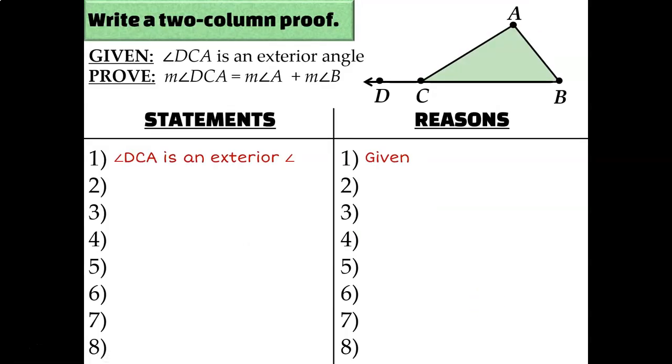All I'm going to tell you is that angle DCA is an exterior angle of this triangle. And what I'm going to ask you to try to prove is that the measure of angle DCA is equal to the sum of the measures of the two non-adjacent interior angles of that triangle. That would be angle A and angle B.